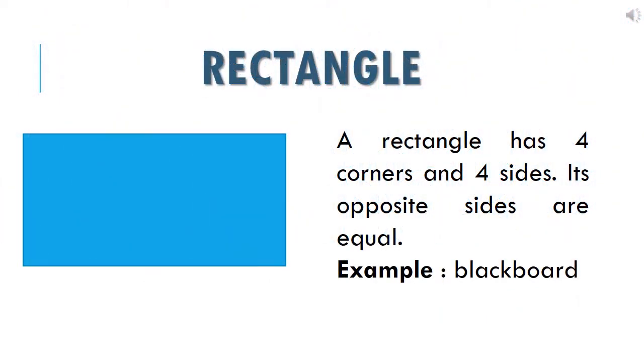Now children, you can see that this is a rectangle. A rectangle has 4 corners and 4 sides, and its opposite sides are equal. Where can you find this rectangular shape? In a blackboard. So, the example of rectangle is blackboard.